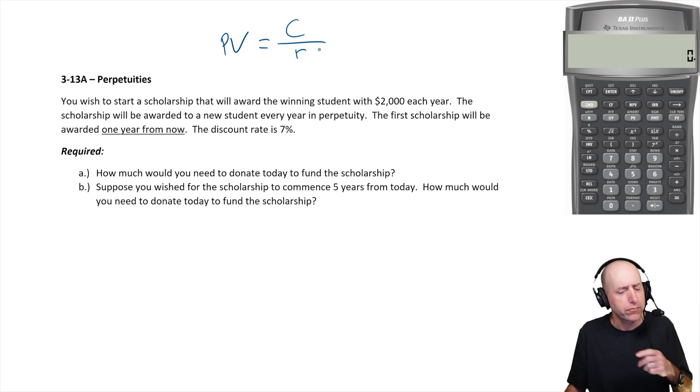Let's jump into the question. You want to start a scholarship that will award the winning student with two thousand dollars each year. The scholarship will be awarded to a new student every year in perpetuity. The first scholarship will be awarded one year from now, and the discount rate is seven percent. How much do you need to donate today to fund the scholarship?